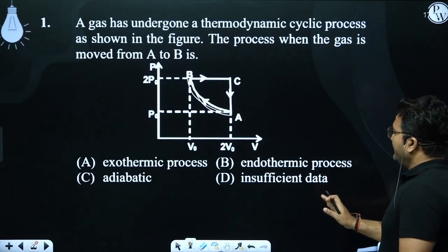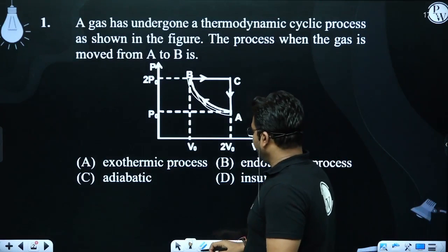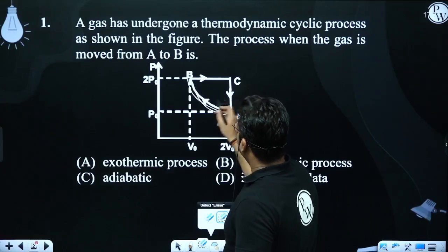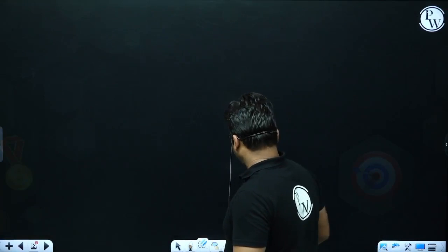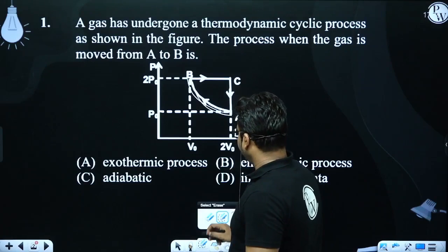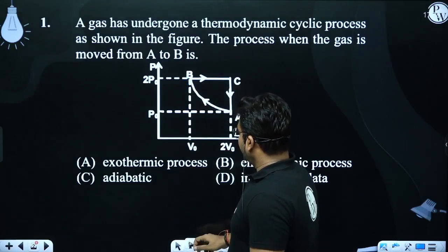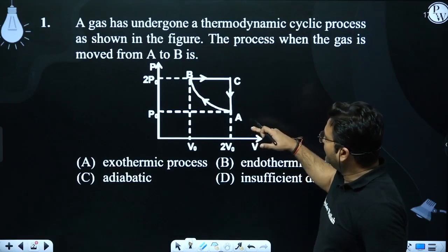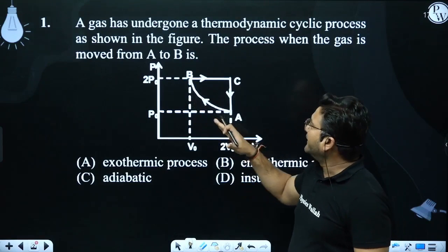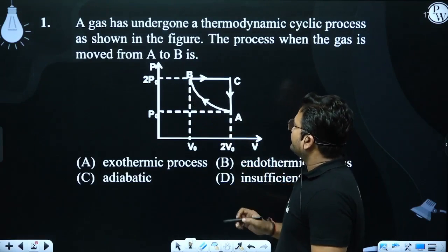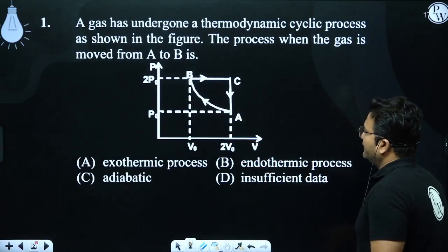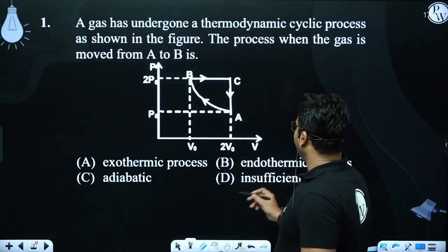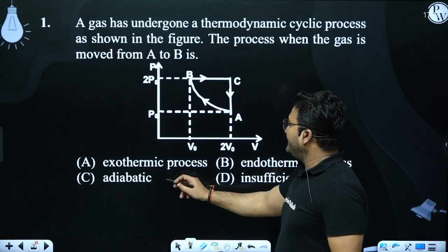From the given data, it will be clear that this process is an isothermal process. We can see that in the isothermal process, the volume of contraction is less. But there is no option stating this process is an isothermal process, and this process will not exist.